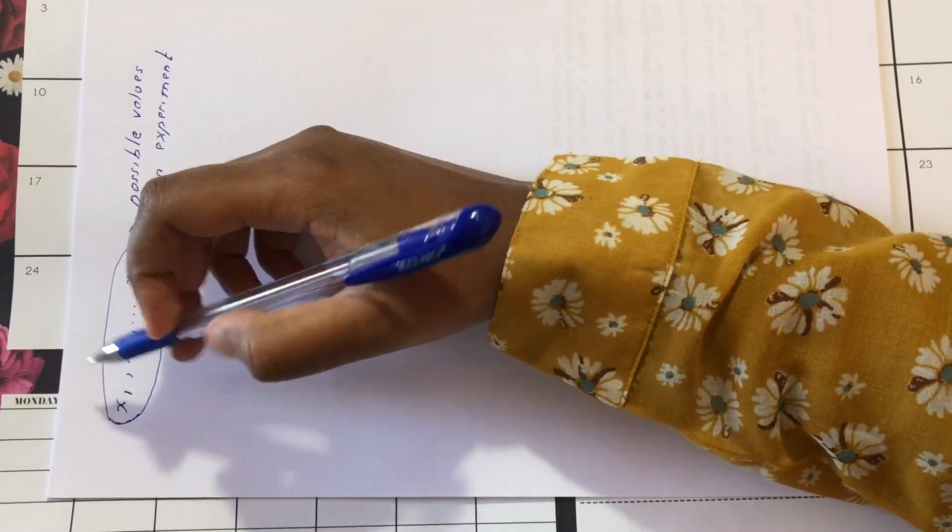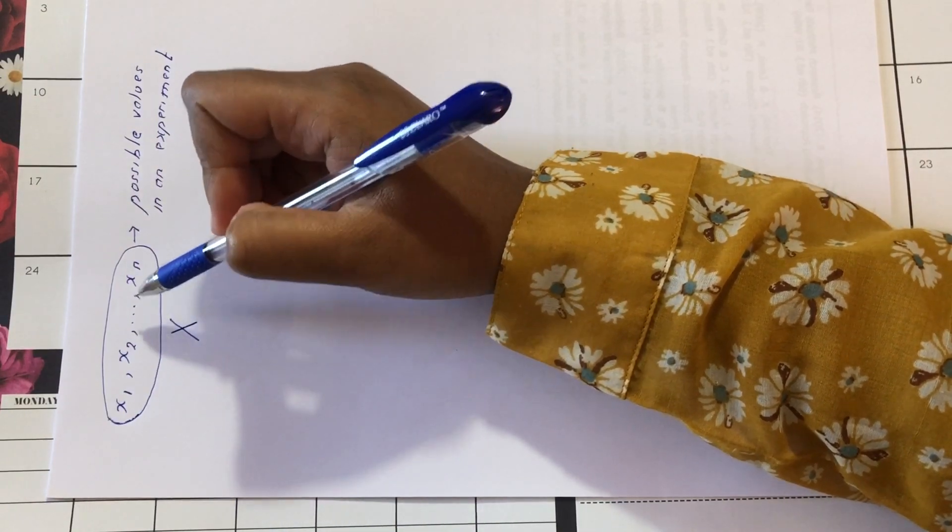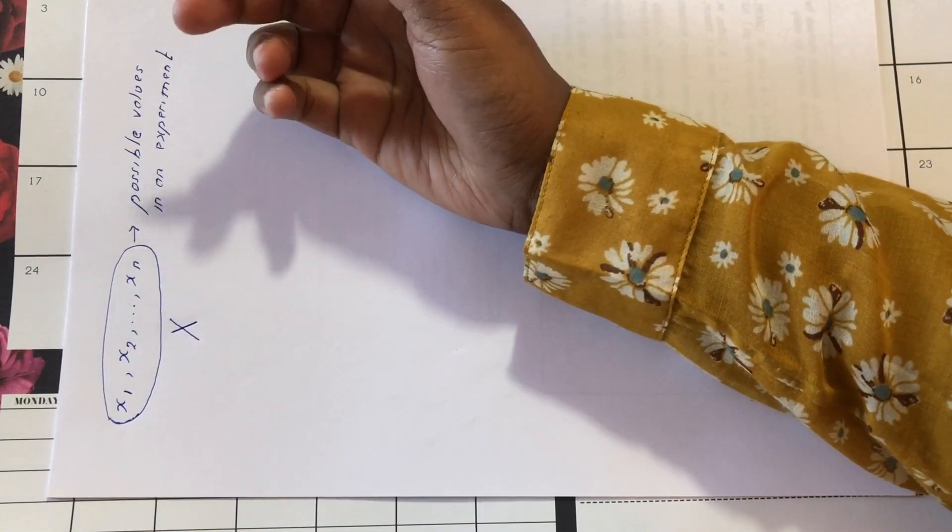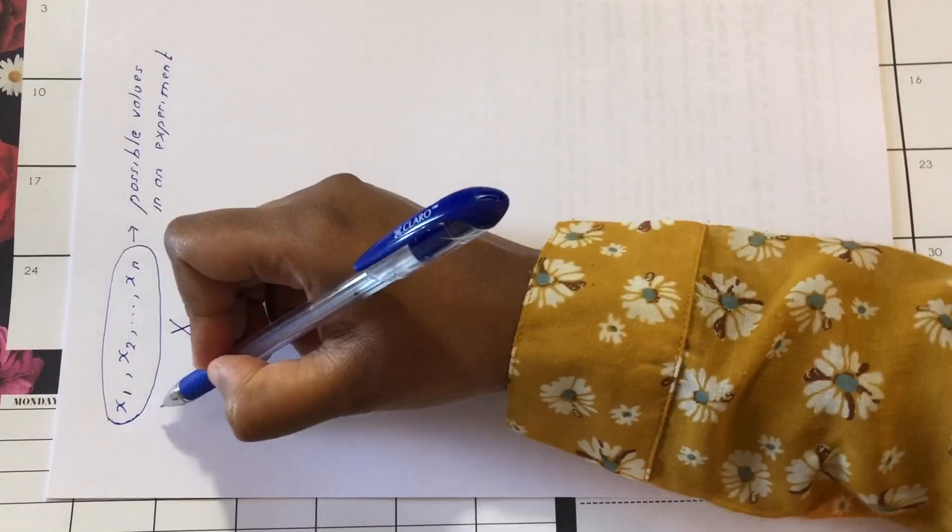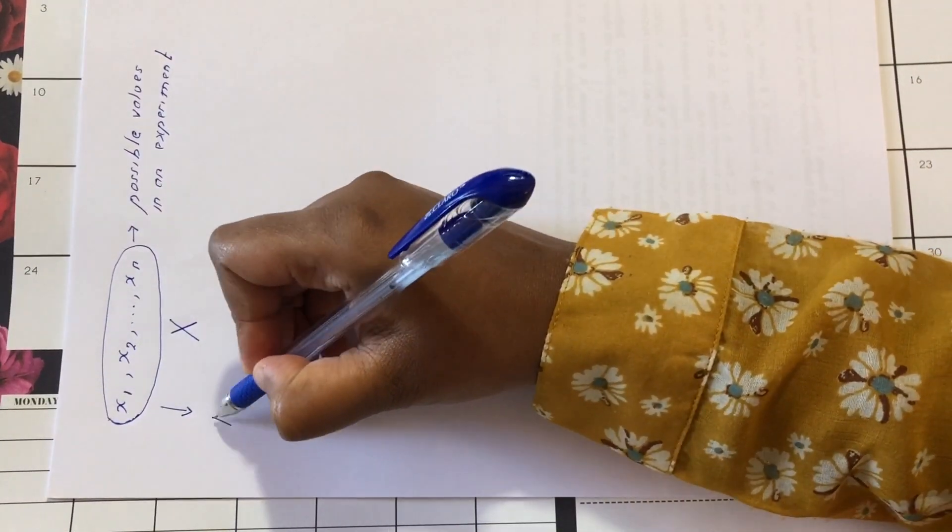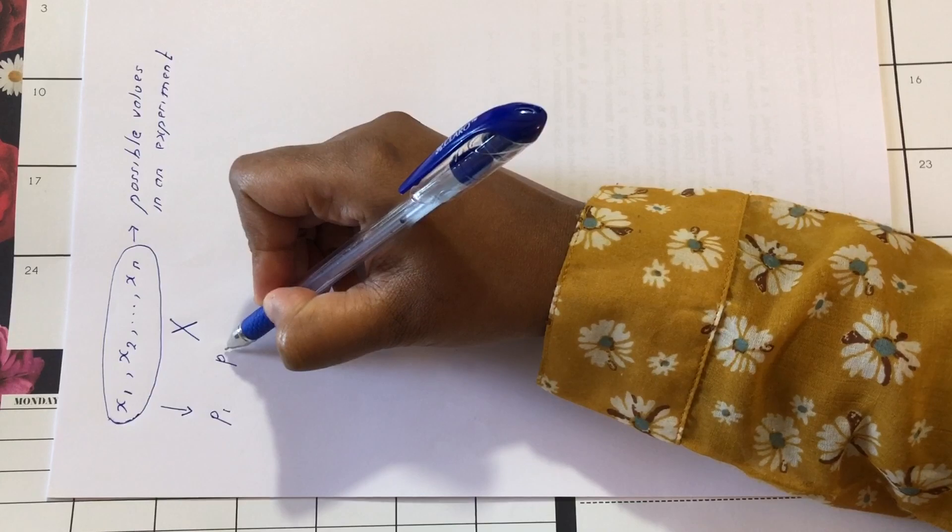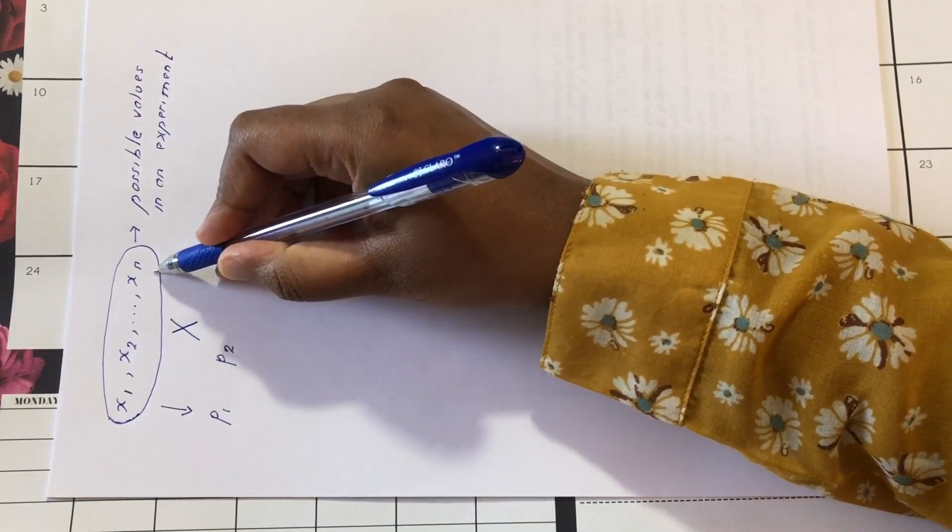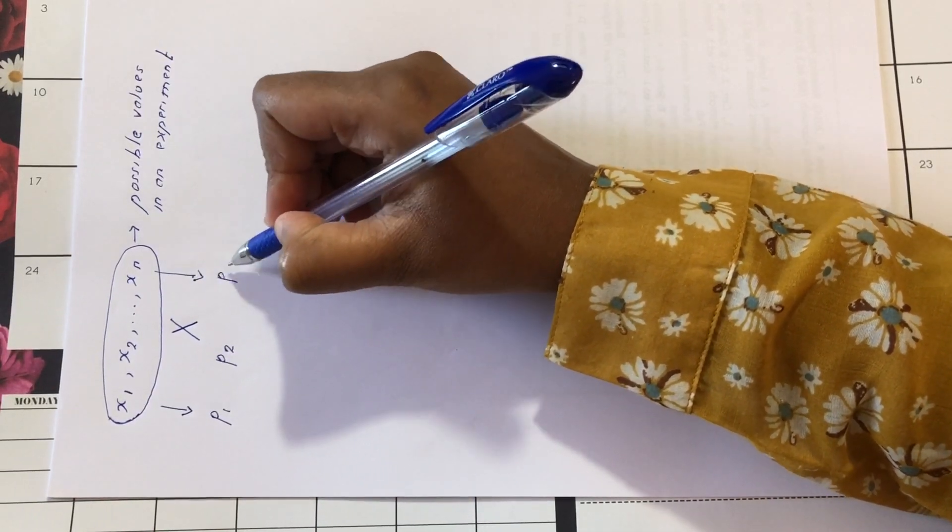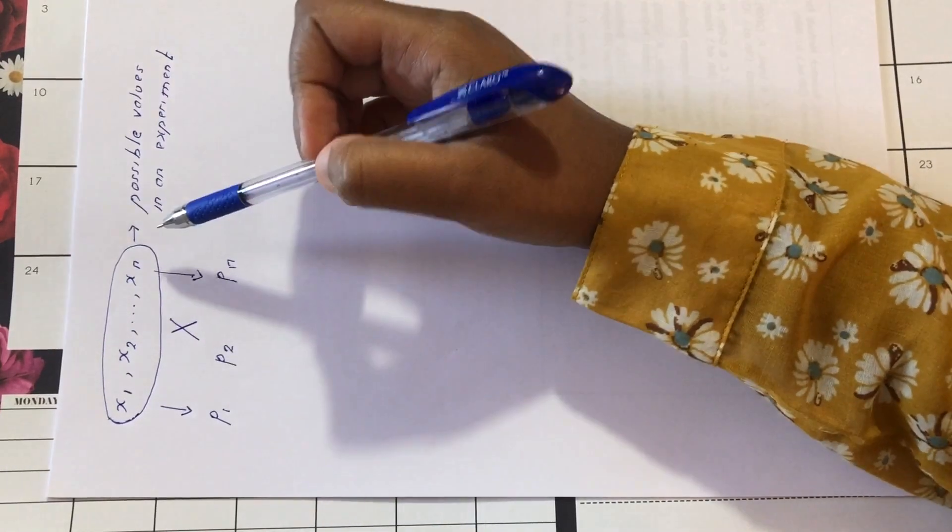For each x1, x2 till xn there is a probability p. So for x1 we have a probability p which is assigned. For x2 we have p of 2 and then for xn we have p of n.